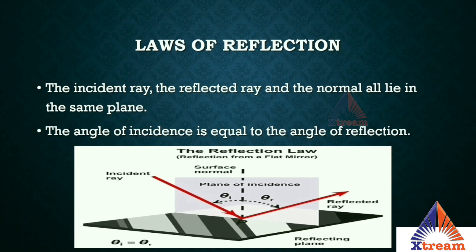The first law of reflection states that the incident ray, the reflected ray, and the normal all lie in the same plane. Consider two planes — the purple one as the X plane and the black one as the Y plane. When you direct a ray onto the plane surface, the reflected ray will also stay in the same plane, that is the X plane.